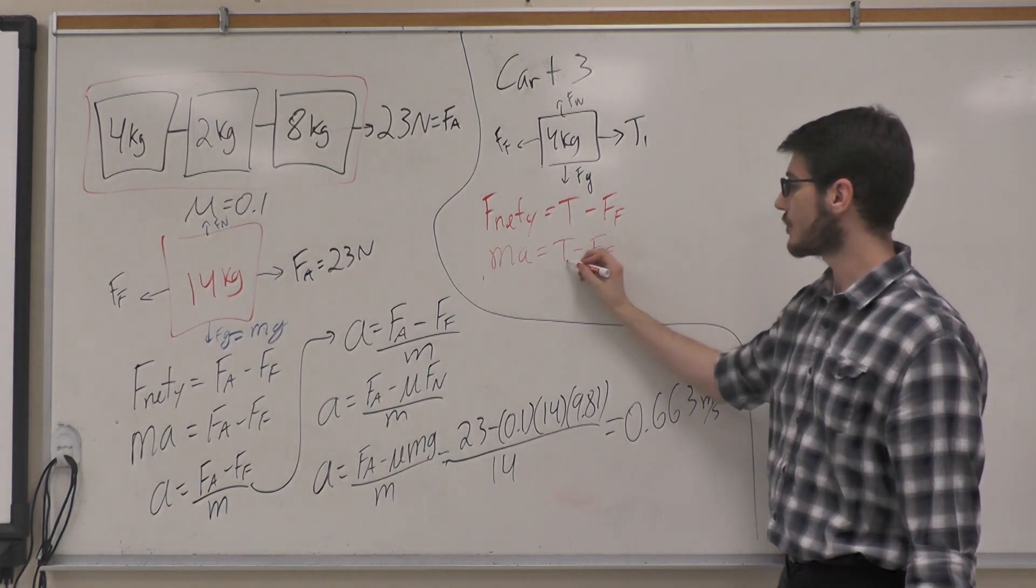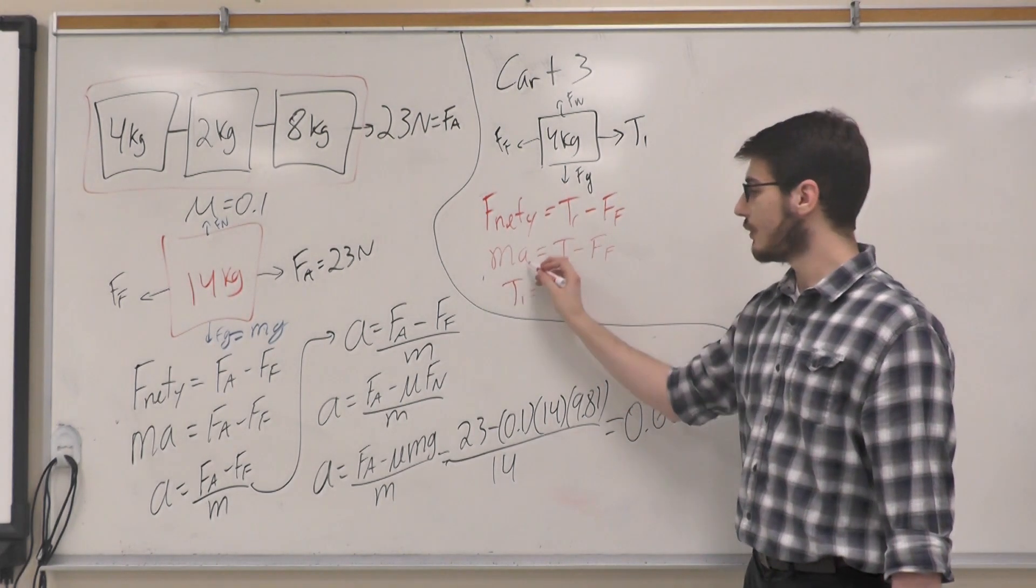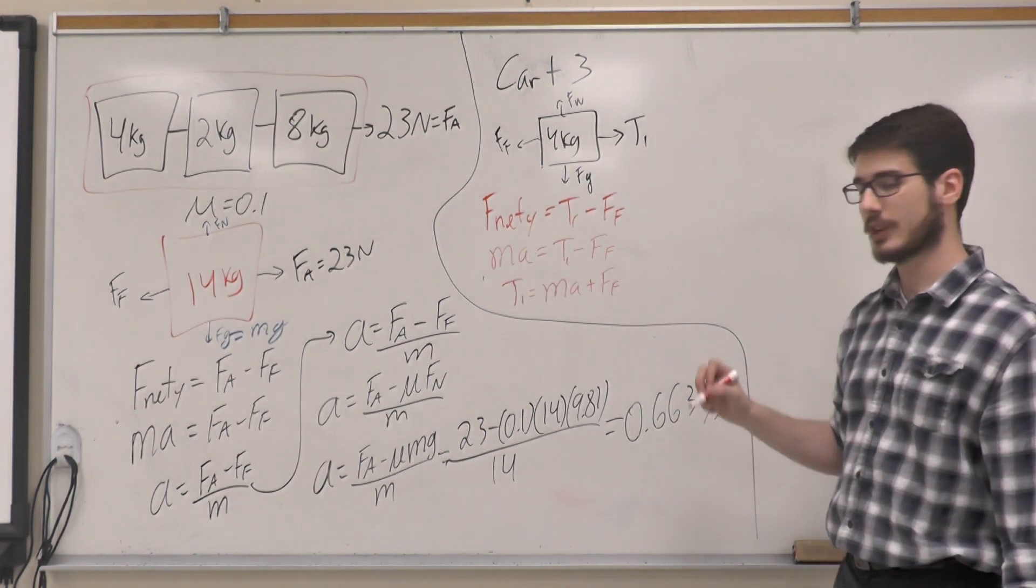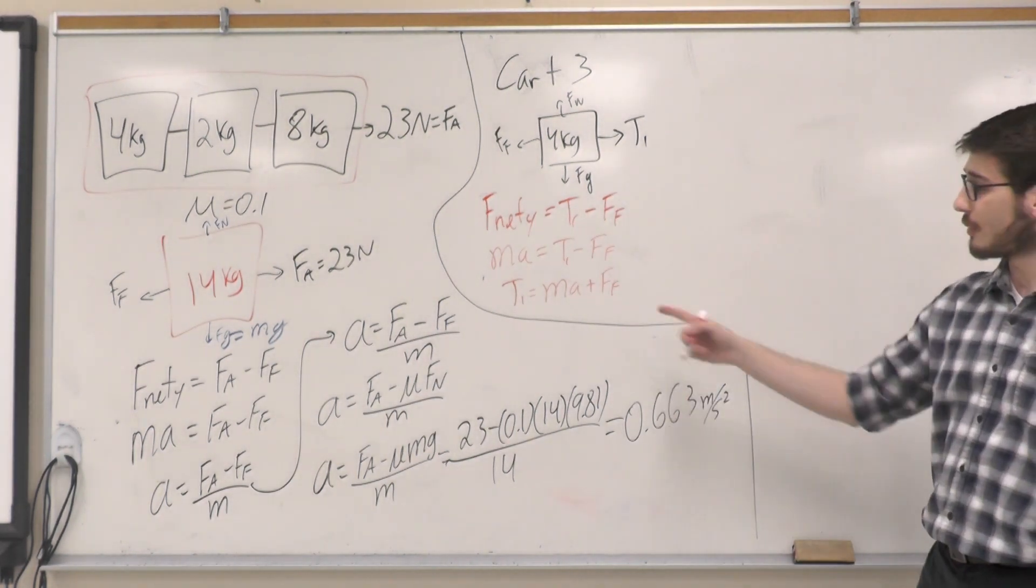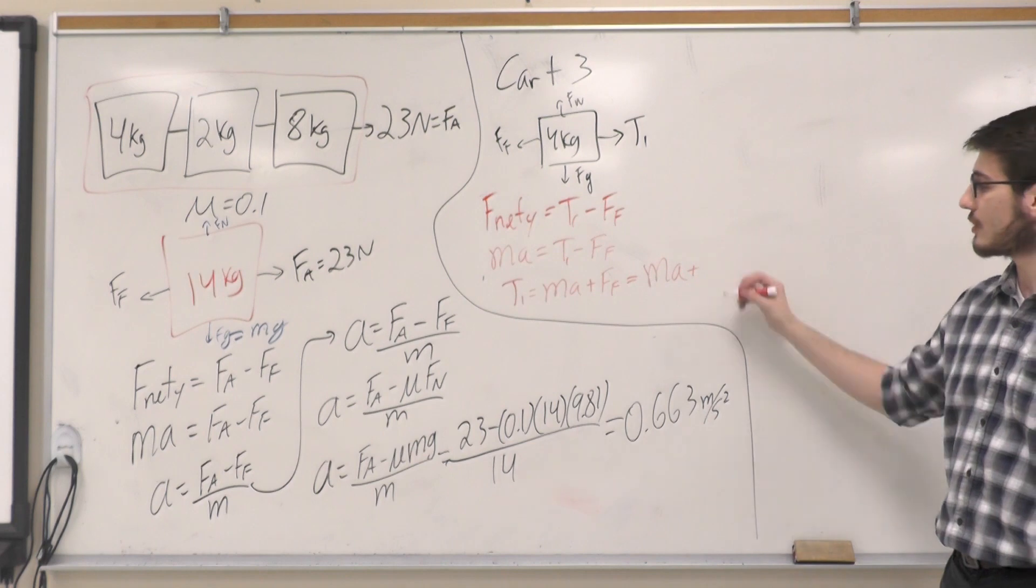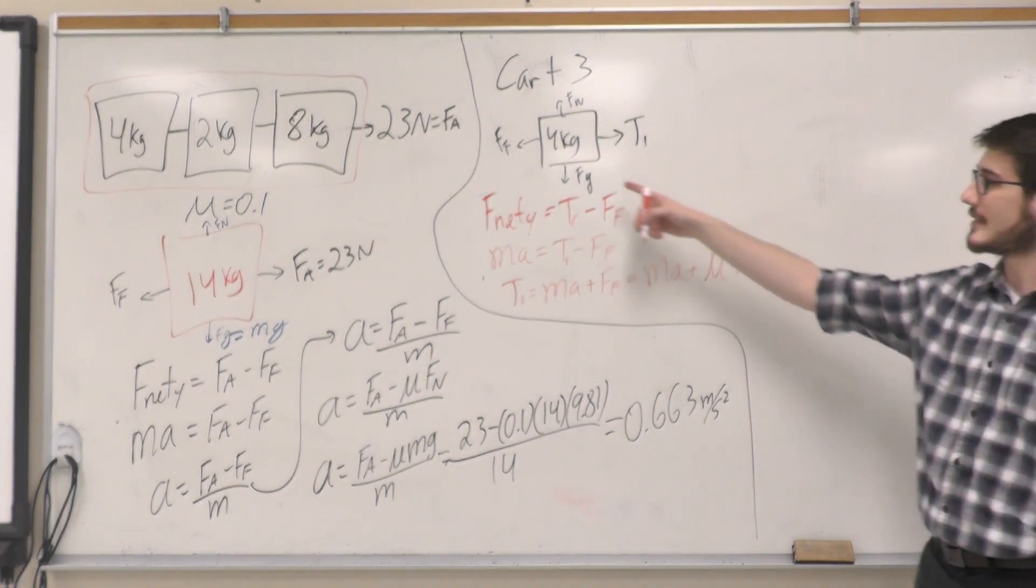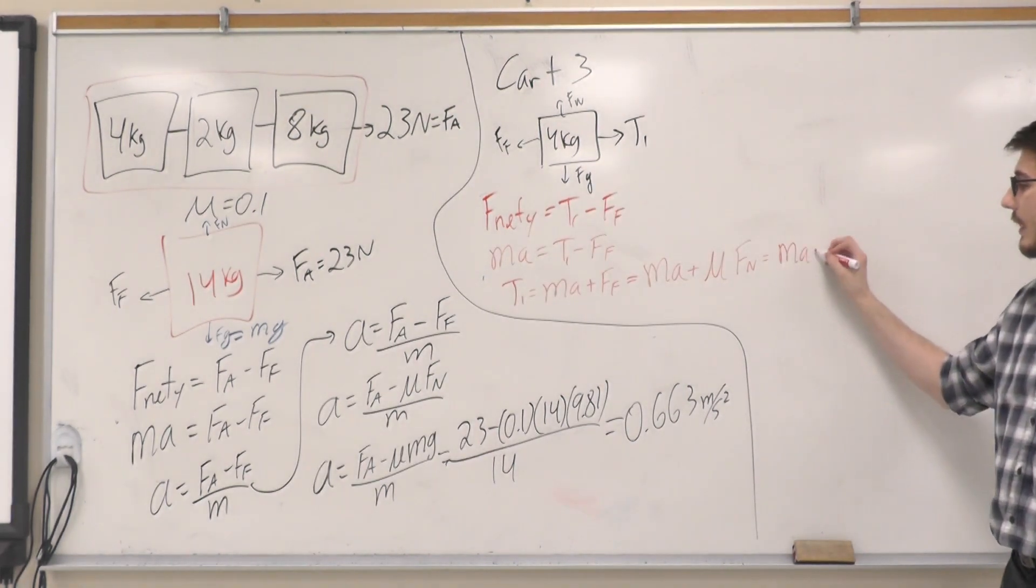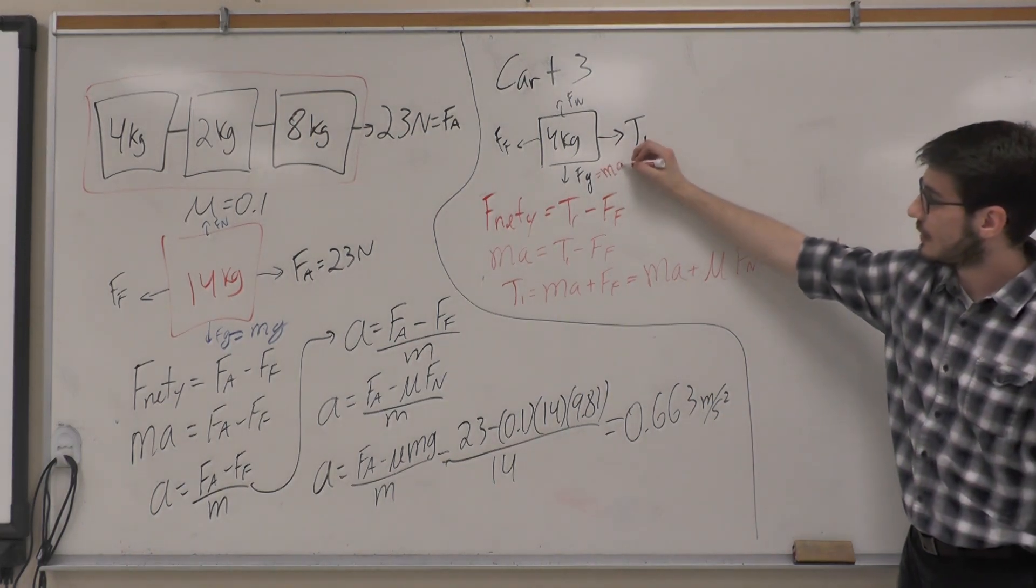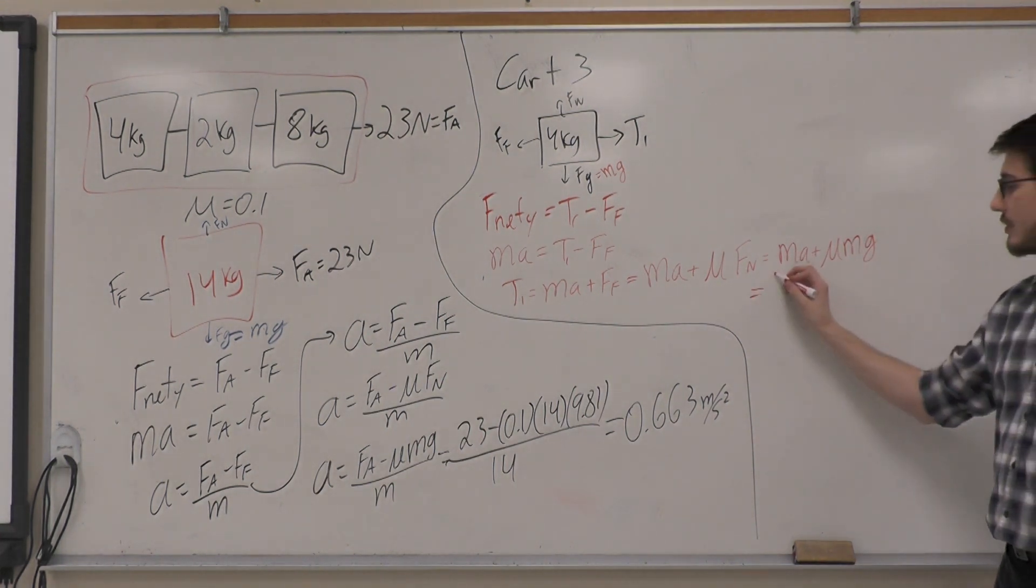We know that F net is always equal to MA. Tension minus force of friction. We want to isolate for tension one, so tension one will be MA added to friction. We can rearrange and solve for the variables. We can change the force of friction to the usual equation mu Fn. In this case, we also know that Fn is equal to Fg, so we can write that MA plus mu Mg.